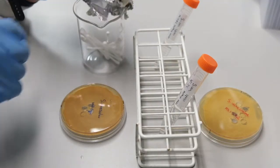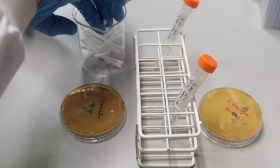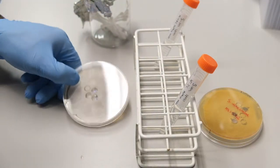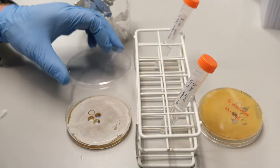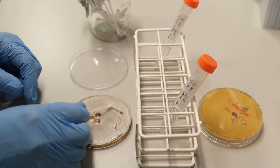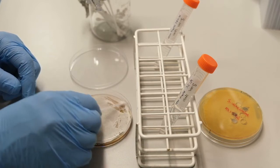We collect the spores by rubbing across the surface of the plate with a sterile cotton bud. We start with wild type Streptomyces venezuelae, collecting spores from across the entire surface of the plate.